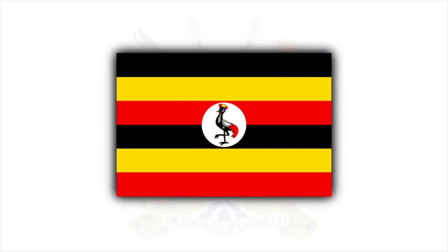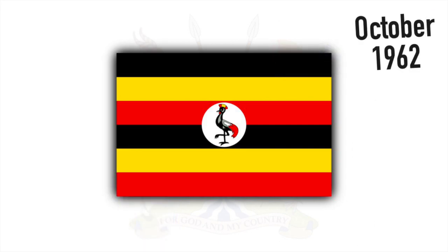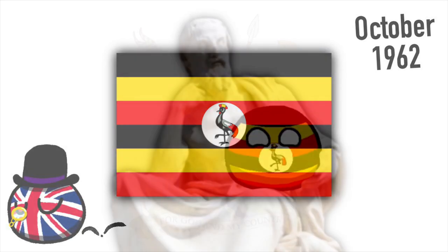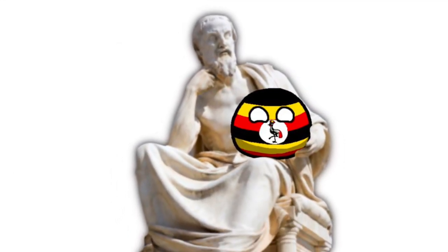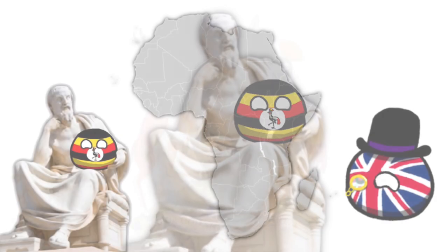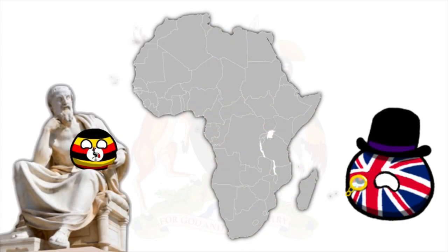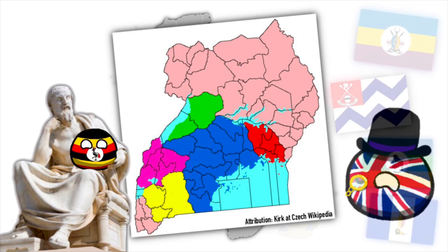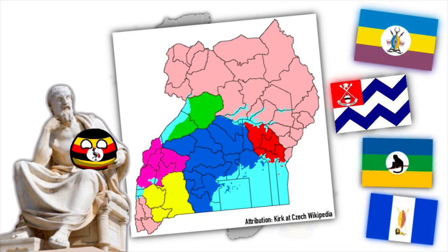The current Ugandan flag was adopted in October 1962 when they gained independence from the British Empire. Before the arrival of the British, the area was ruled by various kingdoms since the Middle Ages, some of which were later restored as traditional subnational kingdoms, and we'll go over these individual flags later in this video.